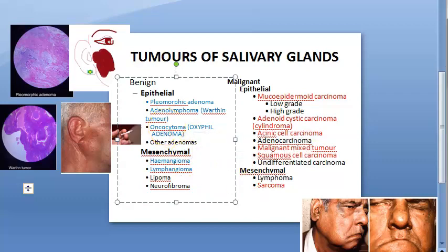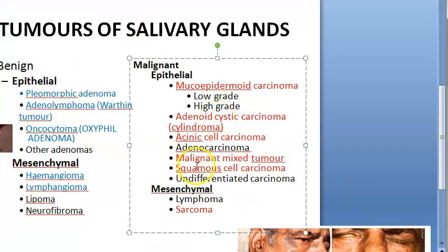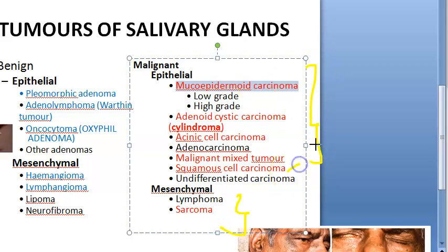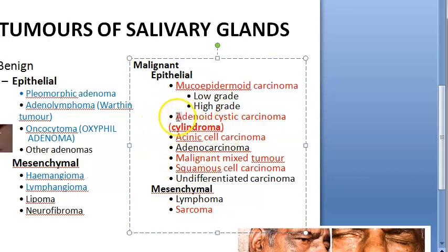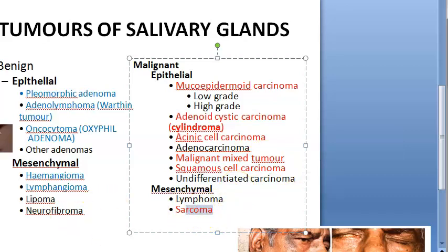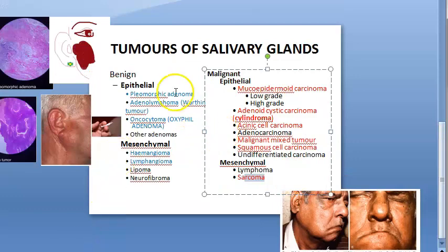For malignant conditions, remember that there are carcinomas and sarcomas. Under carcinoma: squamous cell carcinoma, mucoepidermoid carcinoma, adenoid cystic carcinoma (also called cylindroma), acinic cell carcinoma, malignant mixed tumor, and others. Under mesenchymal malignant origin you would write sarcoma. These were just the names under malignant salivary gland neoplasms.